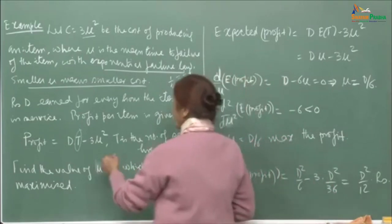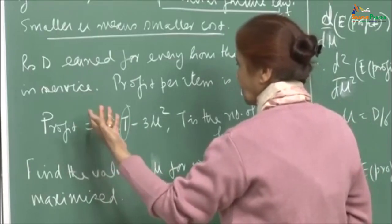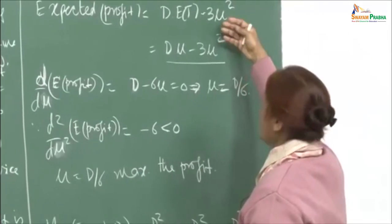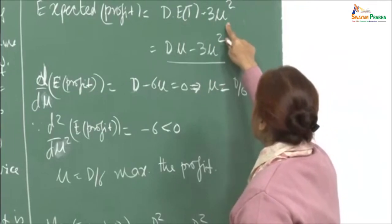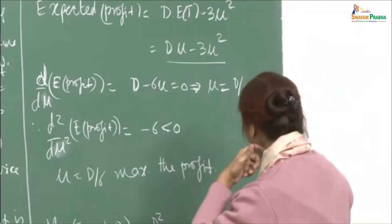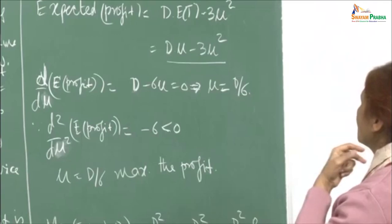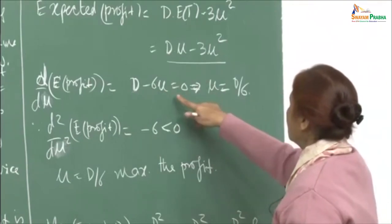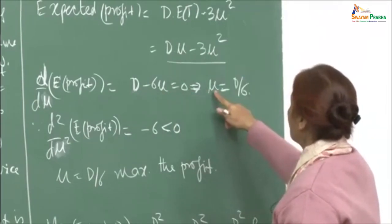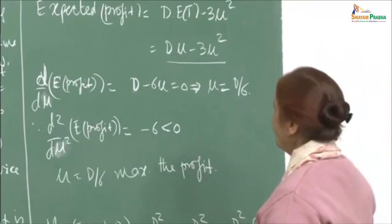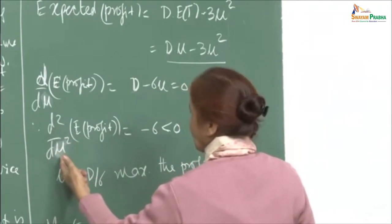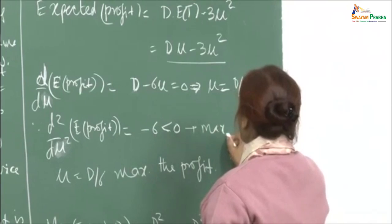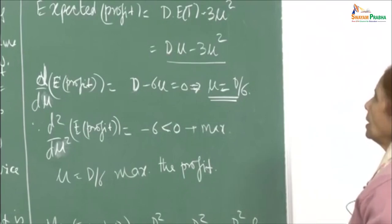Since the lifetime is a random variable, we maximize expected profit. The expected profit is d times E(T) minus 3 mu squared. Since E(T) equals mu, this is d times mu minus 3 mu squared. Differentiating with respect to mu and setting it to zero gives d minus 6 mu equals 0, which implies mu equals d divided by 6. Verifying the second derivative gives minus 6, which is less than zero, confirming this is a maximum.